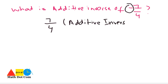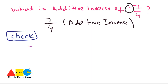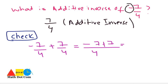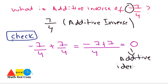You can also check whether it is correct by adding them together. Minus seven by four added to seven by four gives minus seven plus seven over four, which equals zero. This zero is the additive identity, and getting zero confirms they are additive inverses of each other. So to find the additive inverse of a rational number, just invert the sign, and verify by adding — the result must equal zero. Thank you.